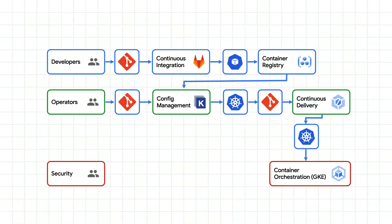For our security teams, let's talk about how to secure your production environments. You also have your own Git repository that is going to store the expected state of the security policies — things like role-based access control policies, quotas for your applications, and restricting risky behavior, such as the ability for containers to run as root.